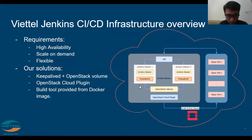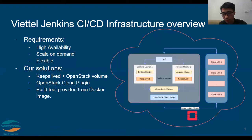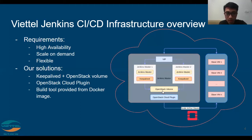Here we have two Jenkins masters running in active-passive mode that receive jobs and distribute them to slaves, following the master. We have a Keepalive process running in each master that makes the two masters share a virtual IP, and OpenStack Volume using a script that detects and attaches the volume to keep it always attached to a healthy node. So with Keepalive and OpenStack Volume, we have a system that meets the first requirement: high availability.